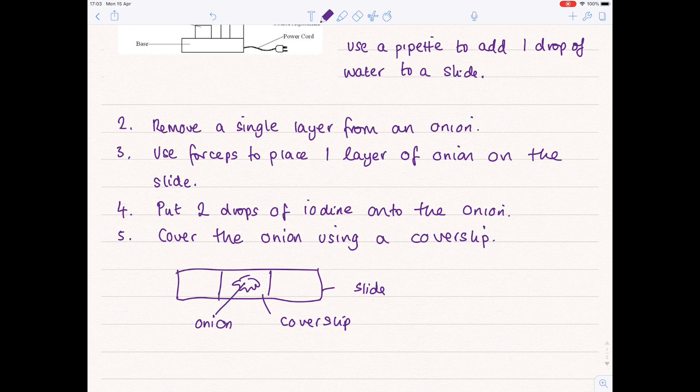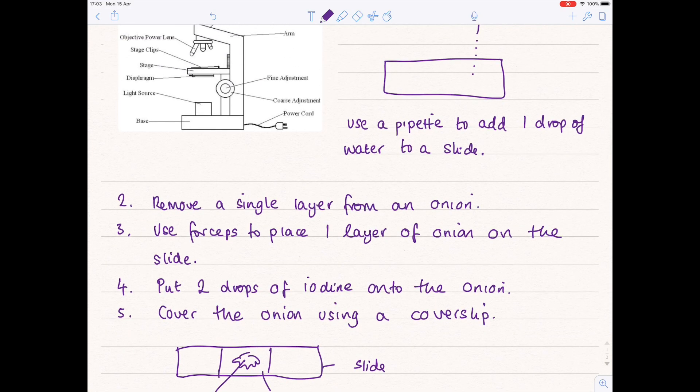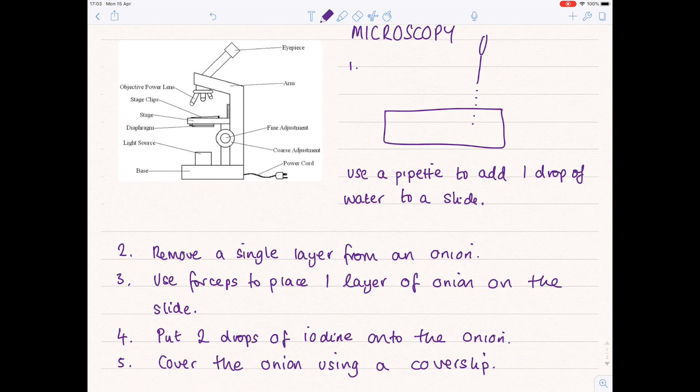So now we're ready to actually view it on the microscope. You're going to place that onion on the stage, which is here, and clip it into place. Now we need to look at using the microscope appropriately.